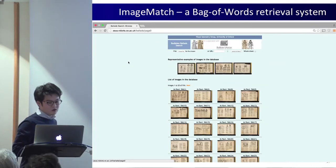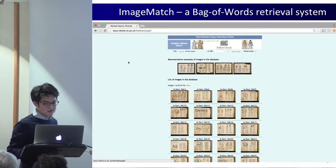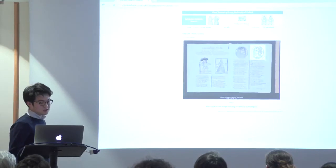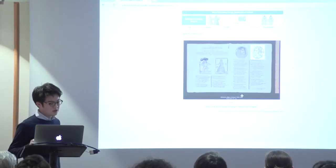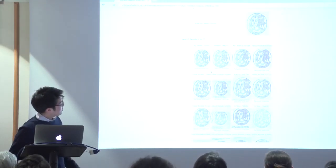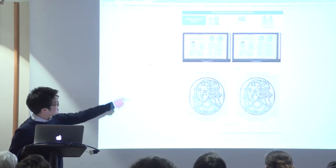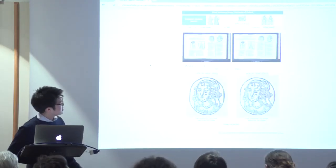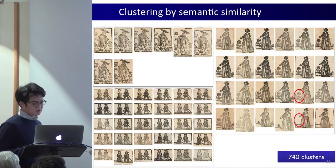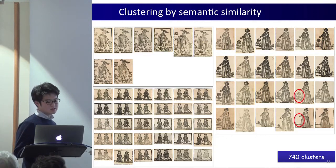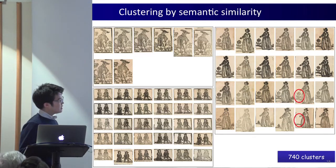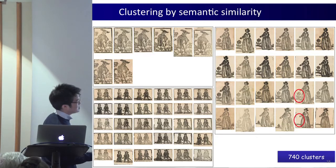For this we have a local implementation of the standard bag-of-words retrieval system, which enables query images to be matched across the collection in real time. You can now see the ballad sheets in which the illustrations appear. Similar looking images are clustered together, but there are some subtle differences in details, which shows that these two images have not been printed from the same woodblock.